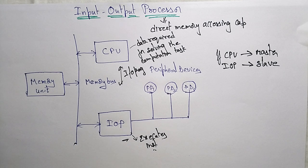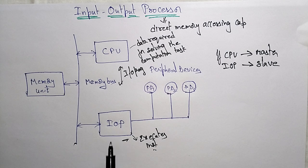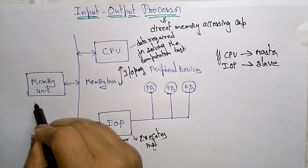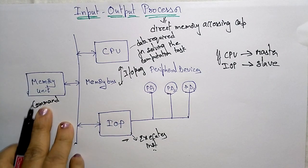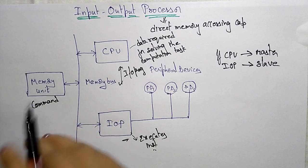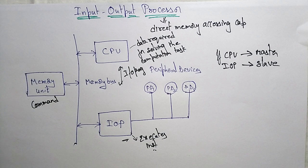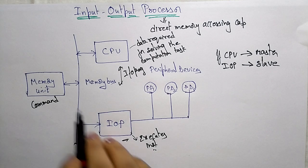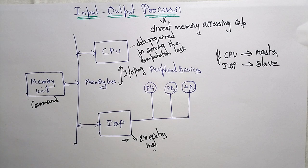The instructions read from memory by the Input-Output Processor are called commands. The IOP reads these command words from memory. These command words are prepared by the programmer and stored in memory. The programmer — meaning ourselves — creates the command words and places them in memory. The CPU then informs the IOP where to find these command words in memory.